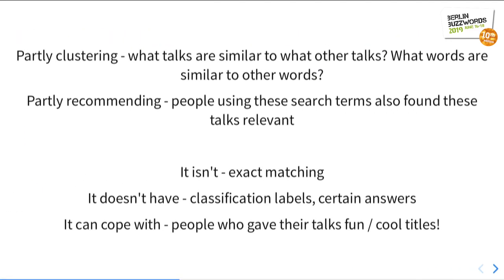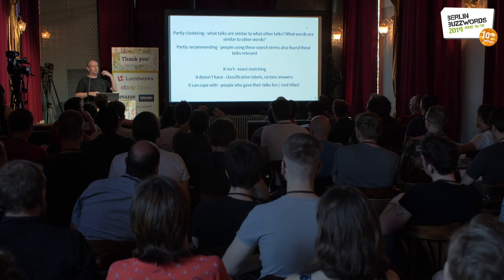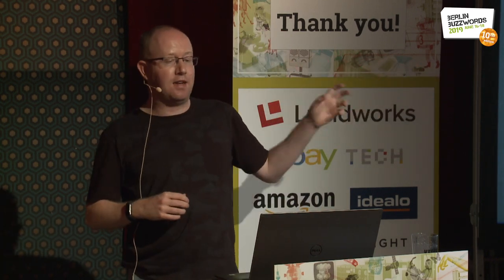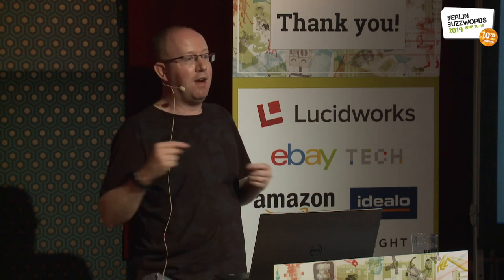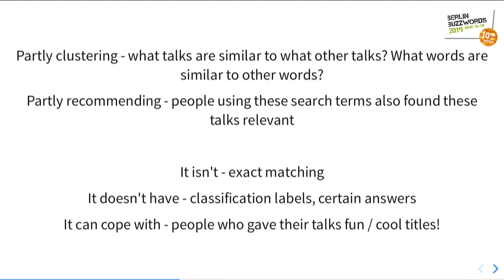What we're going to try and do is partly clustering — what kind of talks are similar to other talks, what words in those talks are similar to other words — and partly it's going to be a recommendation problem. If you went to one talk and you're interested in search, what other talks are you going to be interested in? But it's not exact matching — I don't have classification labels. It has to cope with people who give funny or cool talk titles. We've got to deal with inexact matching, which maps onto my problems at work where people use weird naming and abbreviations.